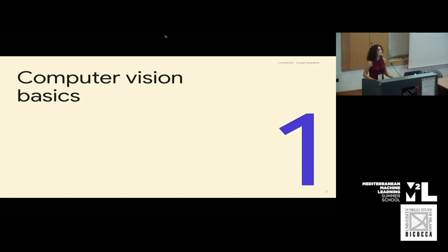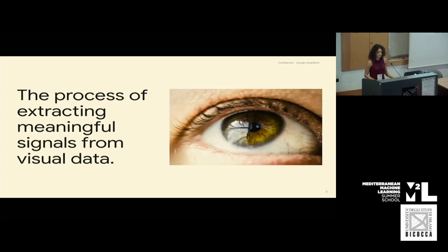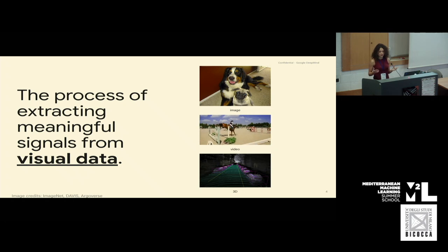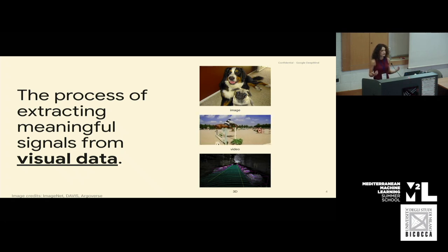We'll start with some computer vision basics. We can define computer vision as the process of extracting meaningful signals from visual data. What we mean by visual data could be lots of different things — it could be an image, it could be a video, it could be 3D visual data, which could span from point clouds or meshes. And it's not only limited to these; it could also be medical data like MRI scans.